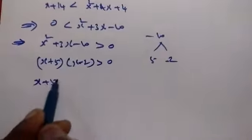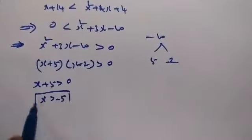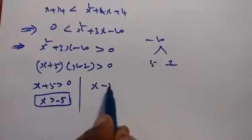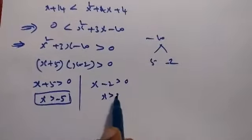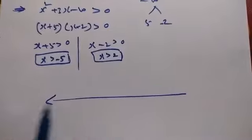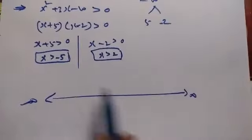So x plus 5 greater than 0 gives x greater than minus 5. x minus 2 greater than 0 gives x greater than 2. For the interval from minus infinity to plus infinity, critical x values are at minus 5 and 2.